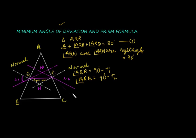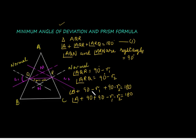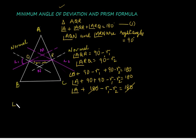Substituting into the equation: angle A plus (90 degrees minus R1) plus (90 degrees minus R2) equals 180 degrees. Rearranging: angle A plus 180 minus R1 minus R2 equals 180. The 180s cancel from both sides, giving angle A minus R1 minus R2 equals zero. Therefore, A is equal to R1 plus R2.